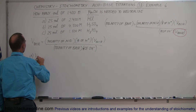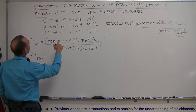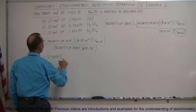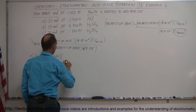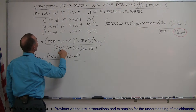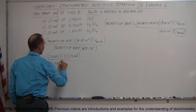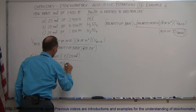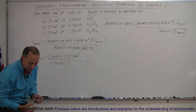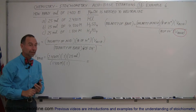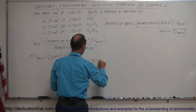For part A, the volume of the base equals the molarity of the acid — 2.430 moles per liter — times the number of hydrogen ions produced for hydrochloric acid, which is 1, times the volume of the acid, which is 25 milliliters, divided by the molarity of the base, 1.420 moles per liter, and sodium hydroxide produces only one hydroxide ion. So 2.43 times 25 divided by 1.42 equals 42.78 milliliters.